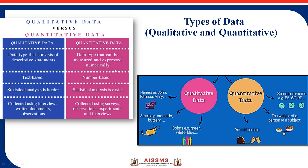Qualitative data is always in a text-based format and quantitative data is always in a number-based format. As seen in this diagram, qualitative data includes names, the name of a particular person, smell, and colors — various colors like green, blue, white. This is called qualitative data: text-based data.